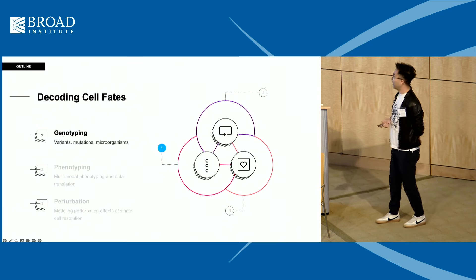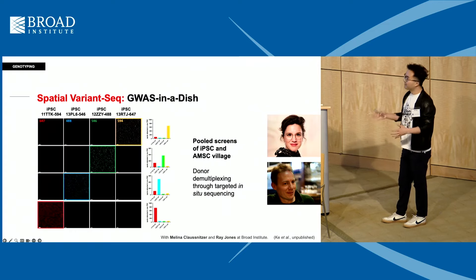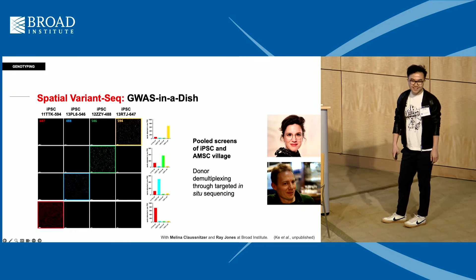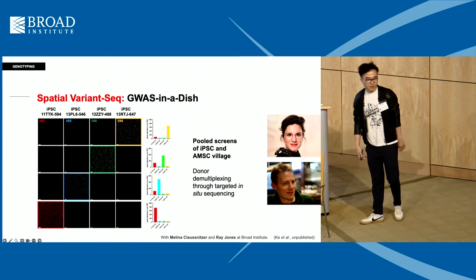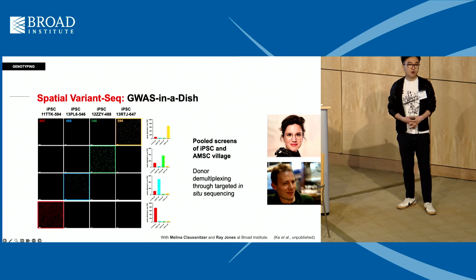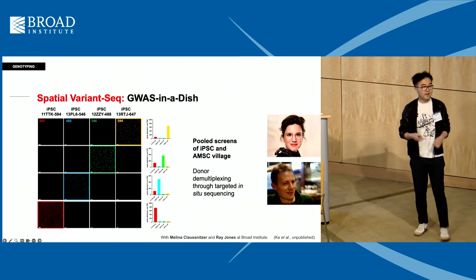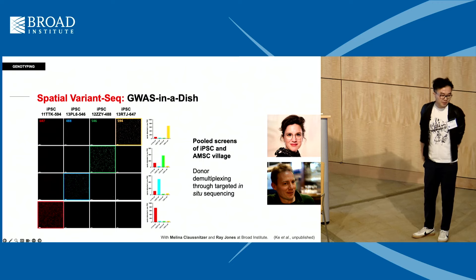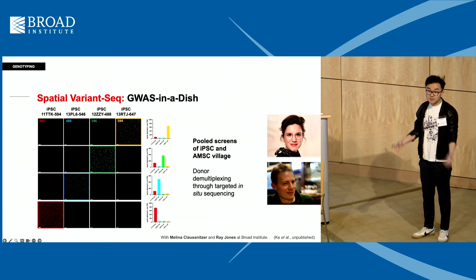The first story is about genotyping: how do we decode the genotype? This is an initial pilot study we just started together with Melina and Ray, supported by the SPARC program. The idea is: how can we decode complex cell villages if we make 20 different iPSC lines and mix them together? How do you know which donor is from where, especially in a spatial context?